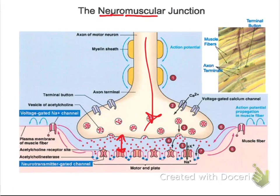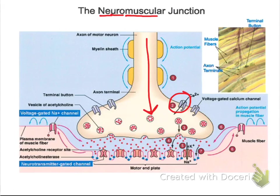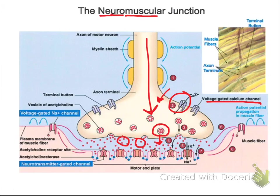What happens is that once the electrical signal gets down to the end of the nerve cell to the axon terminal, it stimulates these gates right here, which are voltage-gated calcium channels. It's because of the electrical current change going on within the nerve cell itself, and what happens is calcium ions rush into the cell and they stimulate these secretory vesicles to be exocytosed across the plasma membrane out into the synaptic cleft.